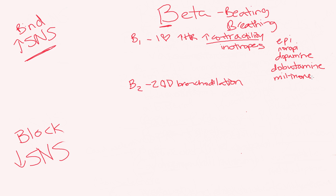I'm going to further divide the beta 1 category into inotropes that act as pressors and inotropes that are inodilators. Dobutamine and milrinone are inodilators — they are inotropes, but they also vasodilate after the heart. That makes them great drugs for congestive heart failure and cardiogenic shock from CHF, because you want to increase contractility and decrease the load on the heart — decrease afterload.